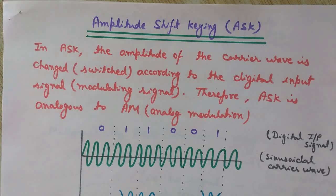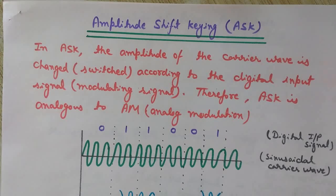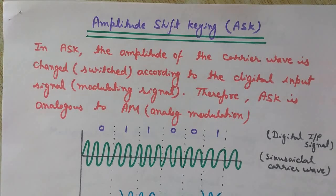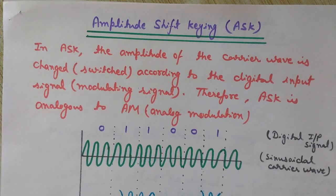The main difference is based on the modulating signal, that is, the message signal. In both digital and analog modulation, the carrier wave is of analog nature. However, in analog modulation the modulating signal is also analog, whereas in digital modulation the modulating signal is digital in nature — it is a stream of binary inputs.